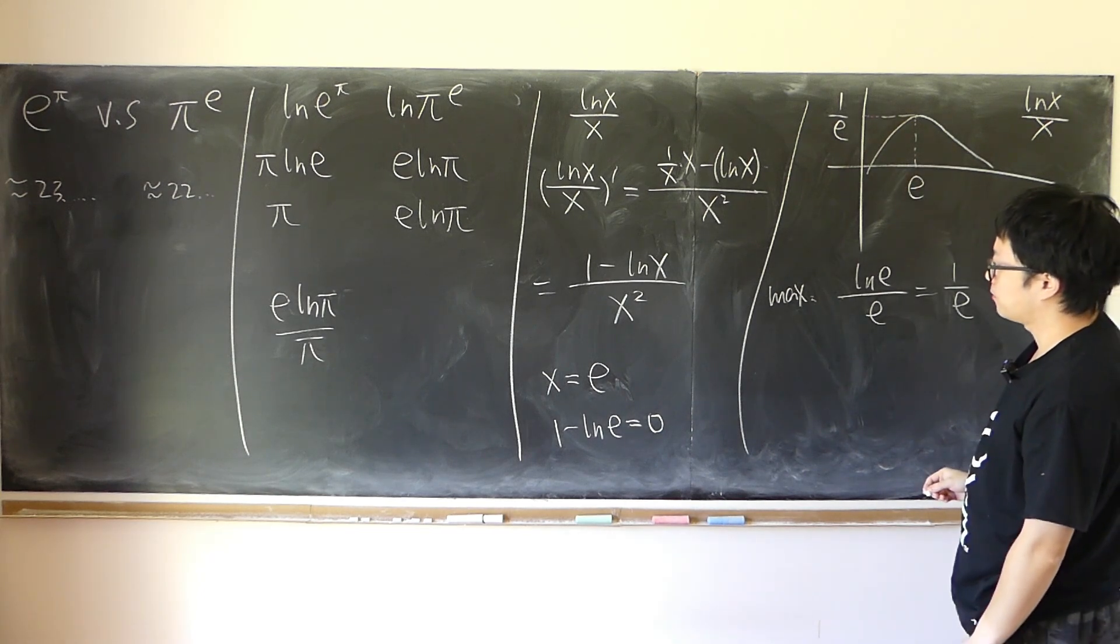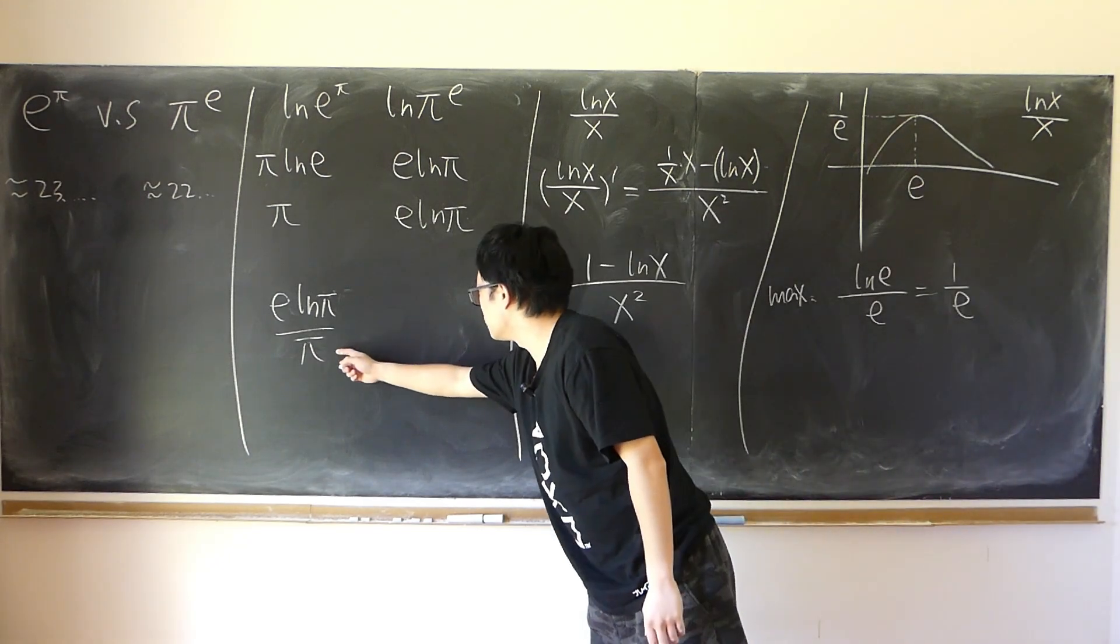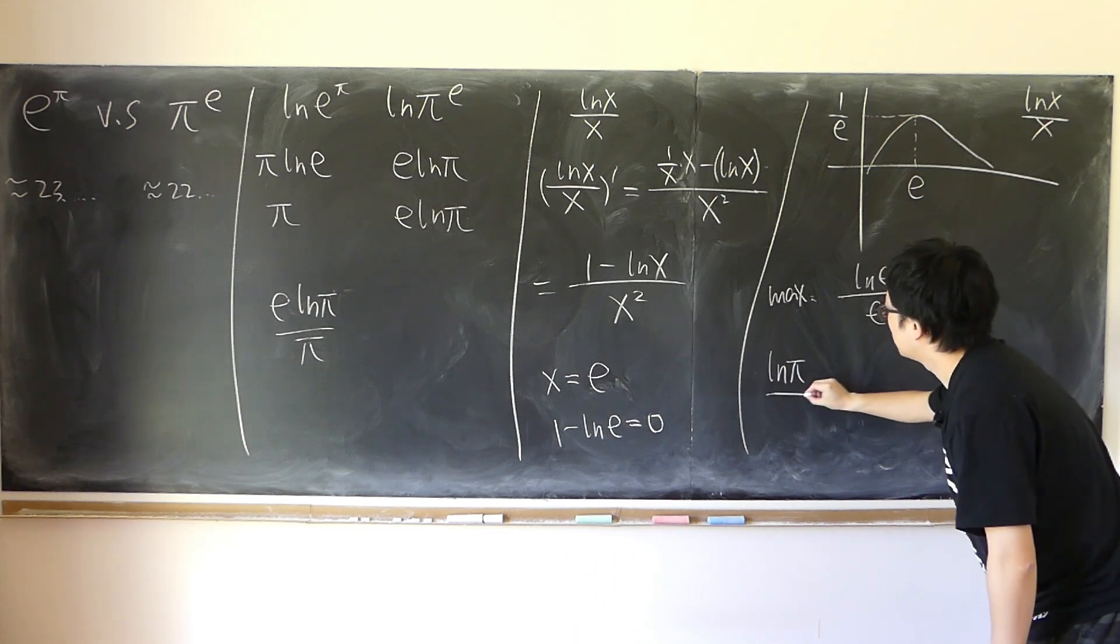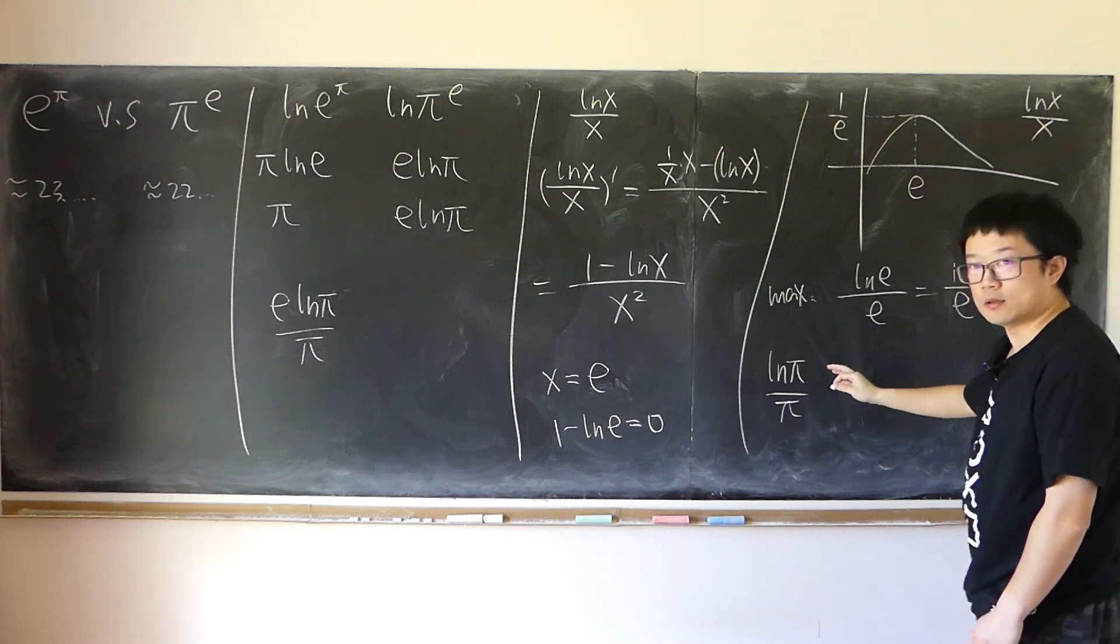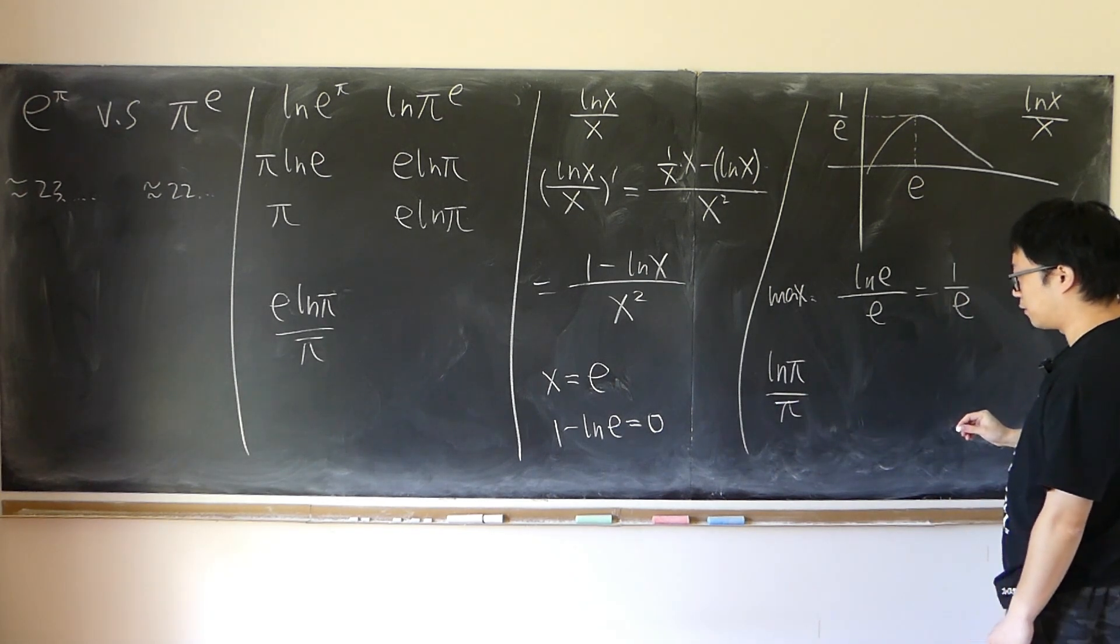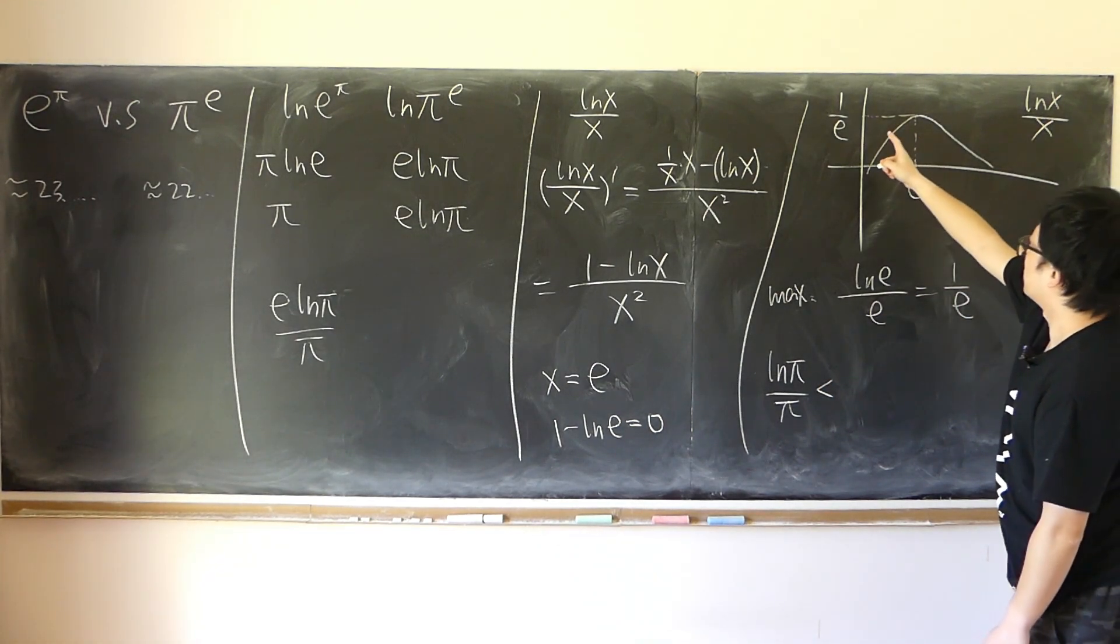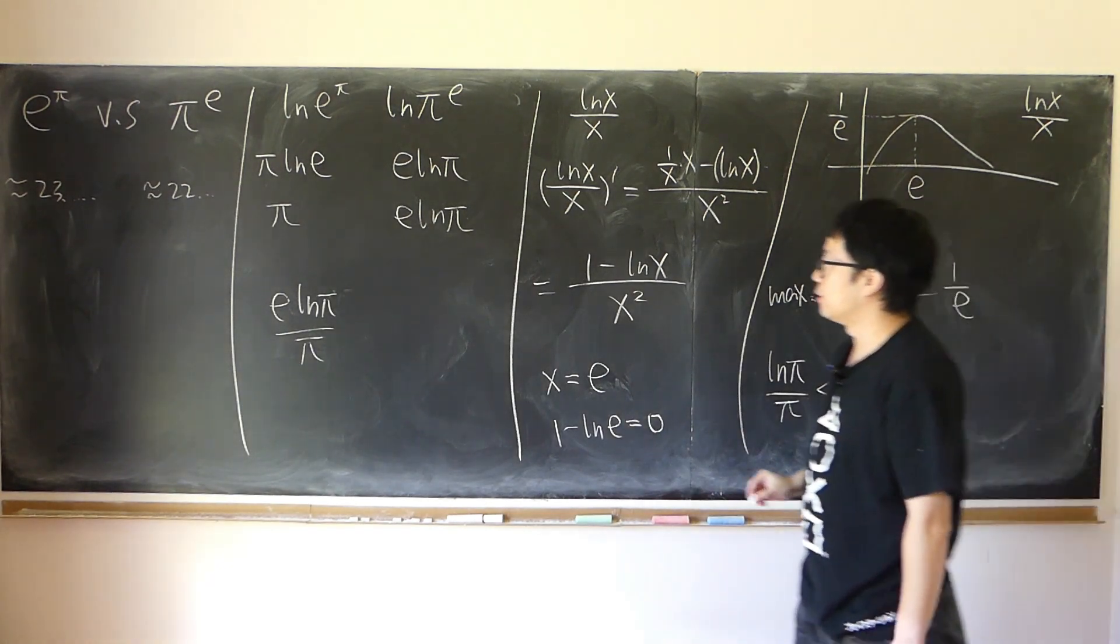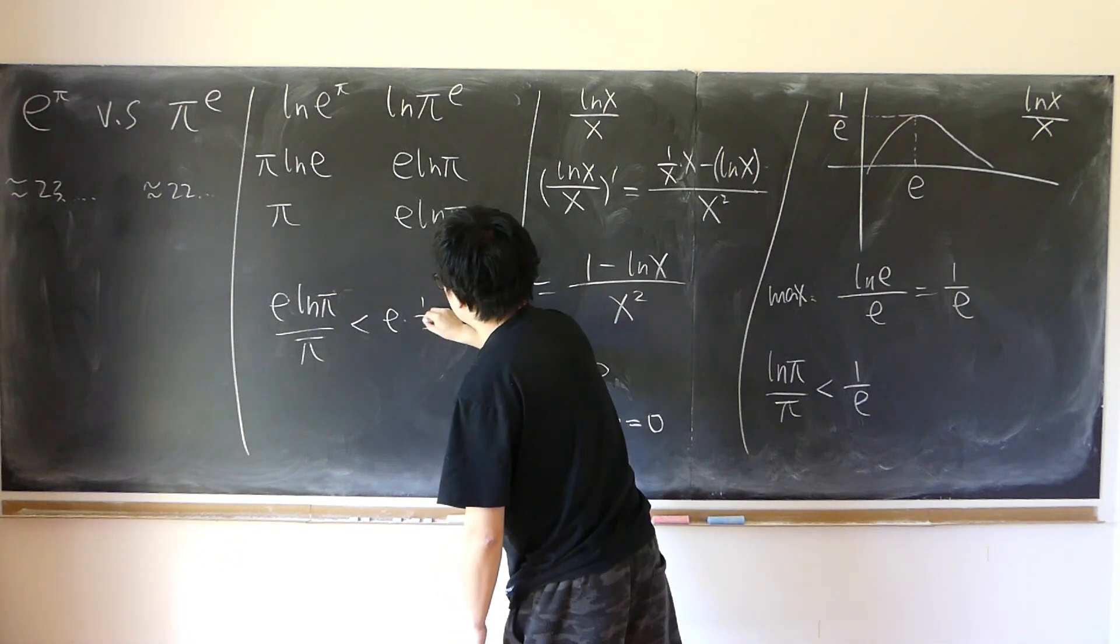So which means when x is equal to pi, what happens is that if you plug x equal to pi into it, we don't even have to know whether pi is bigger than e or not. We can immediately say that this is strictly less than the maximum value, 1 over e. So meaning this is strictly less than e times 1 over e, that is 1.